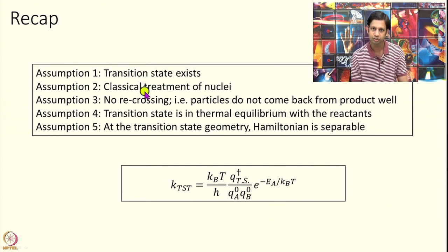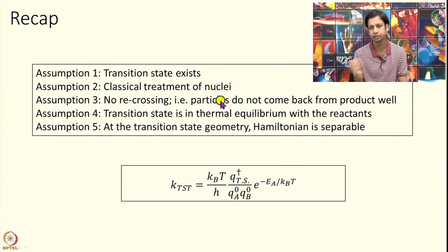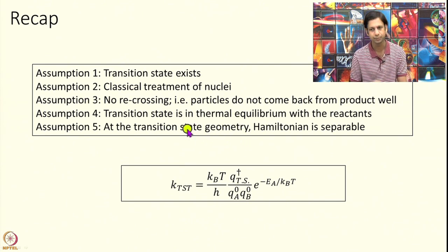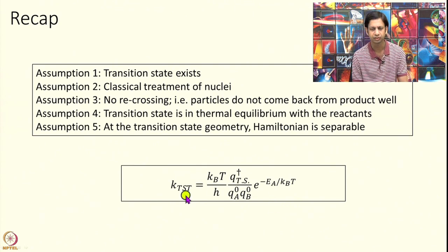The second approximation is that we treat nuclei classically. Third, there is no recrossing — we look at positive flux only, sitting at the transition state and counting particles moving forward. Fourth, we assume the transition state is in equilibrium with the reactants. And finally, we assume separability of the Hamiltonian at the transition state along the reaction coordinate and all other coordinates. Under these 5 assumptions this relation can be derived.